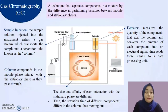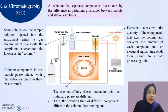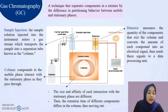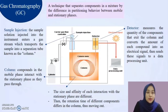The detector functions to measure the quantity of the components that exit the column and convert the amount of each component into an electrical signal. It then sends these signals to a data processing unit, and the data obtained determines the compounds' quantity in the sample and in what amounts.